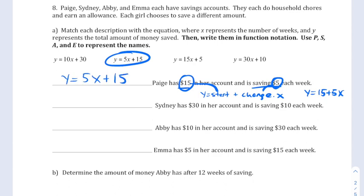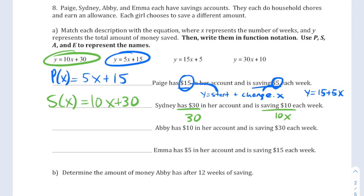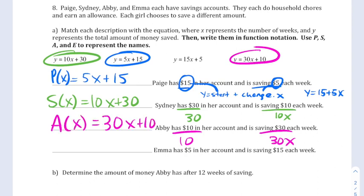However, instead of writing it like this, I'm going to give it the name p of x because it's Page's function. The second one for Sydney, she has 30 and is saving 10. So we should have 10x and 30, which I see in this equation. Because it's Sydney, I'm going to write s of x equals 10x plus 30. Next, we have Abby who has $10 and is saving 30. So 30x and 10 to start with. That's this equation. And since it's Abby, we'll write a of x equals 30x plus 10.